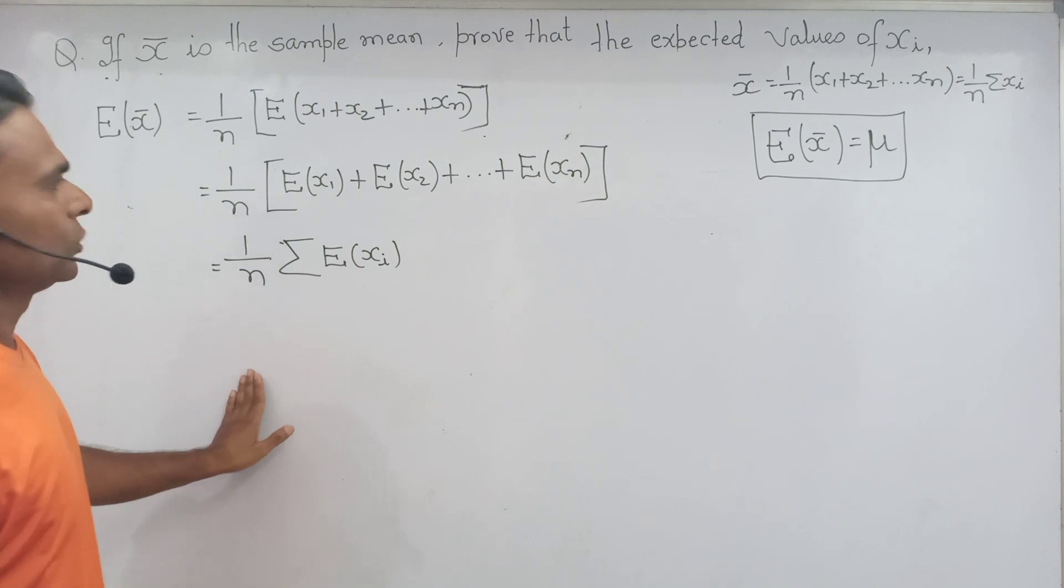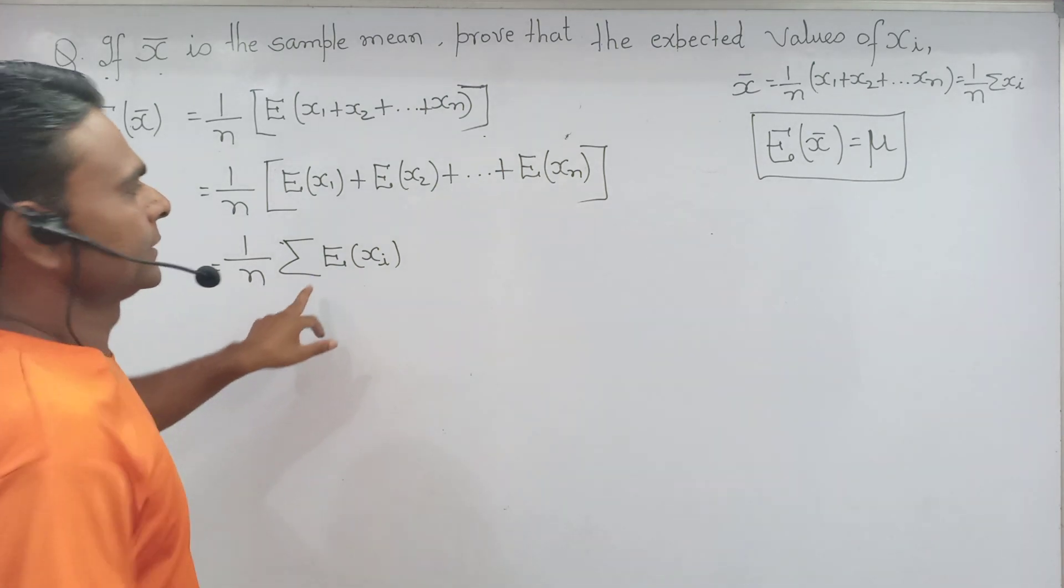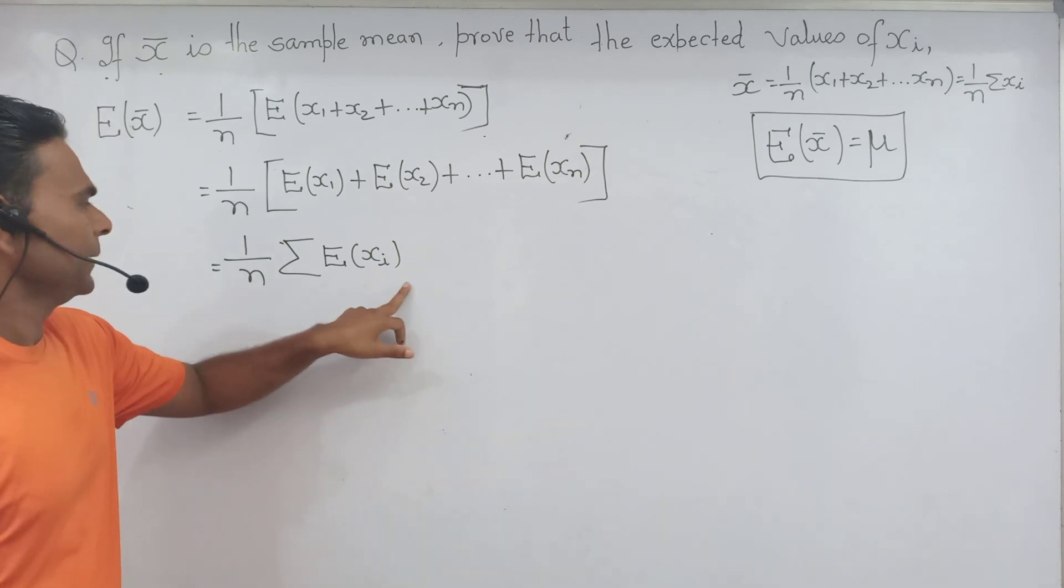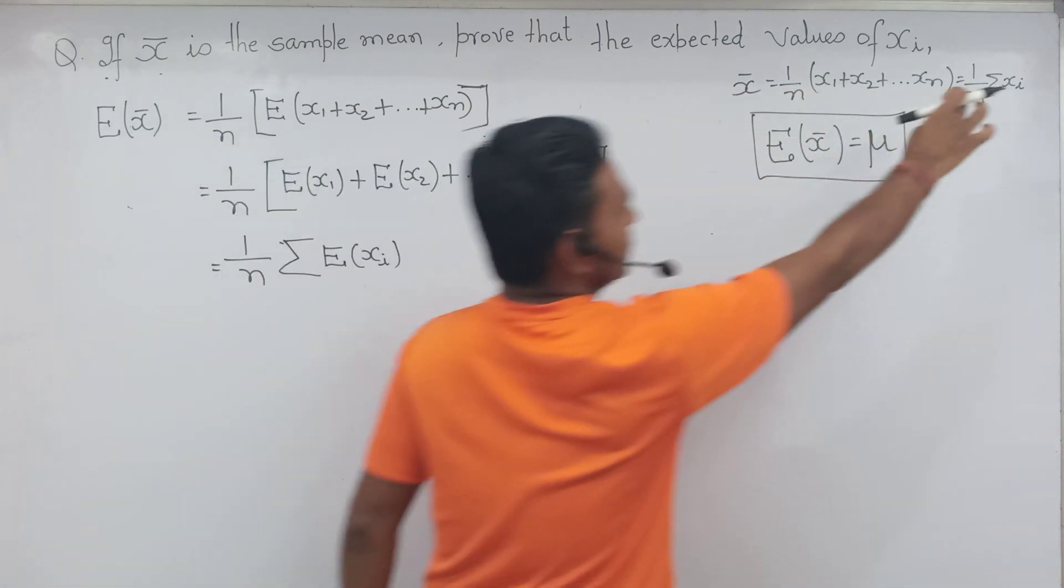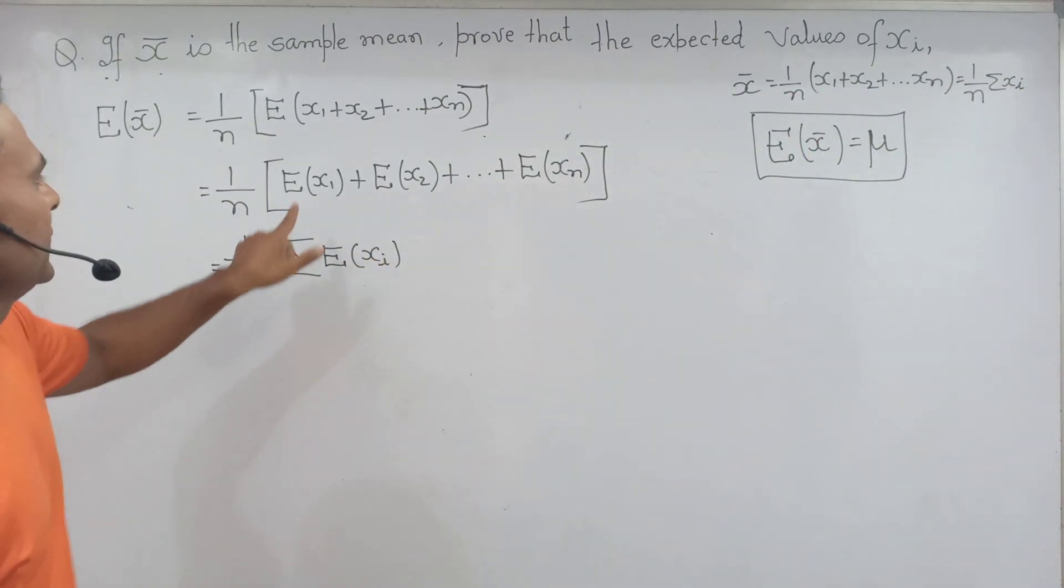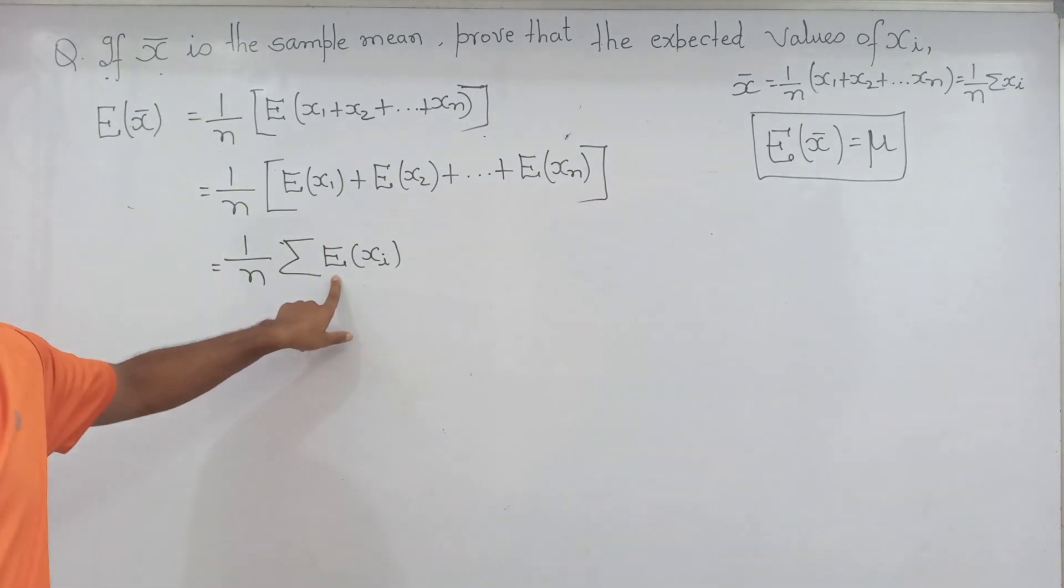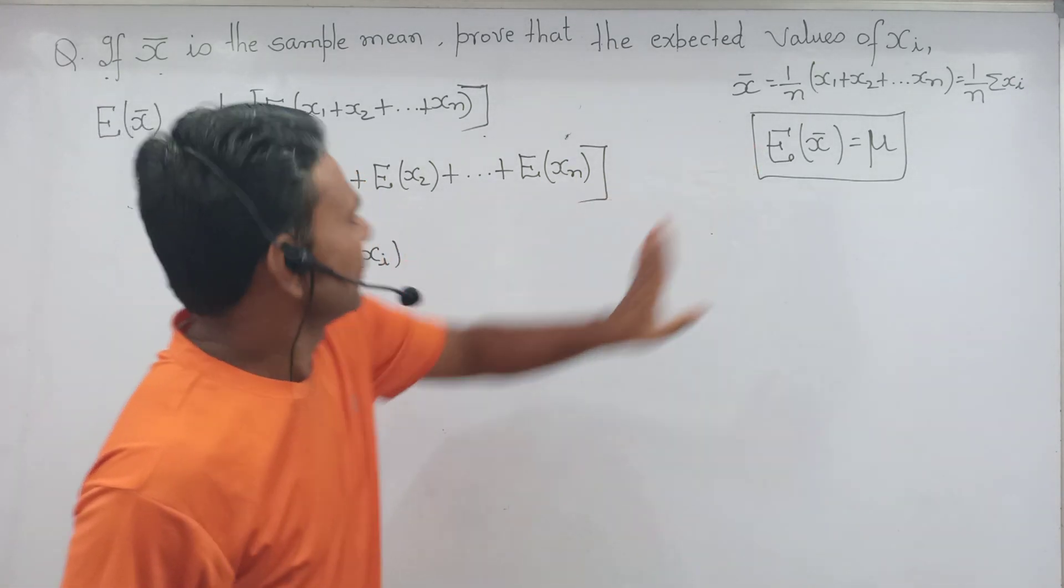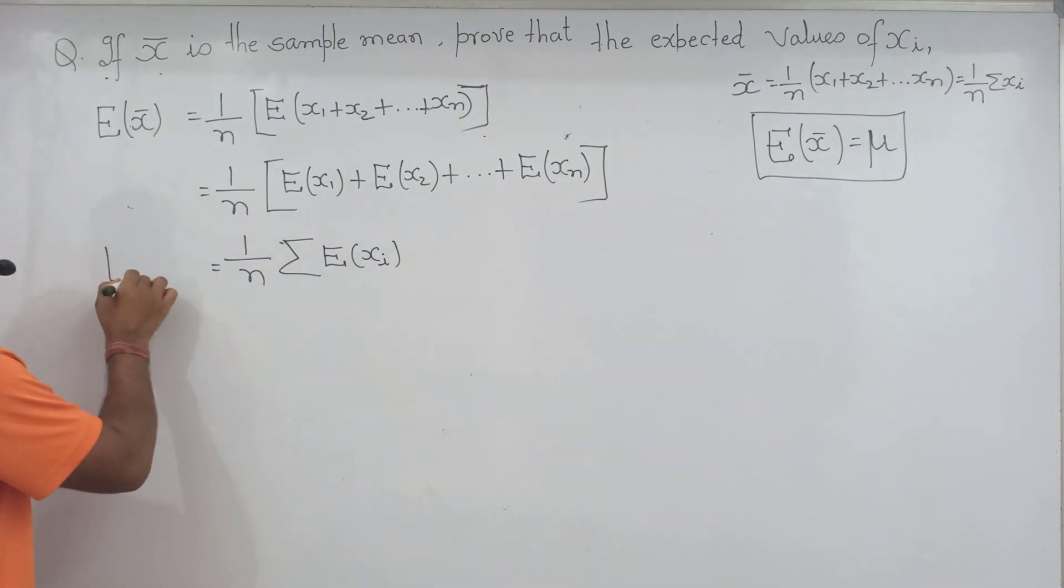Yahaan par e laga dete hai, expected value of X_i. Bahut simple ek bara aap samajhne koshish kijiye. Sirf yahi cheez ko main yahaan par likha hoon. Ek ismein antar yah hai ki ismein expected value aa gaya hai, jiske karan e ko maine likha hoon, baki wahi formula hai.